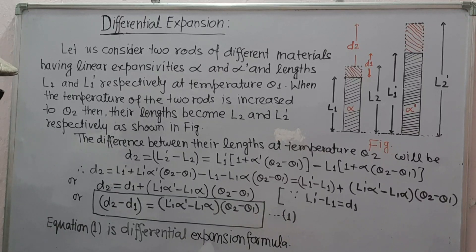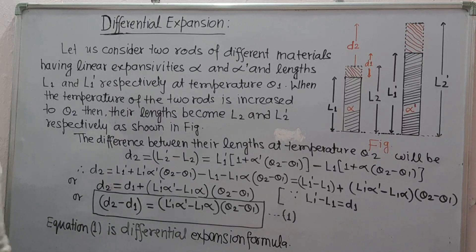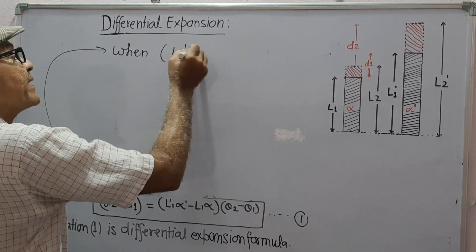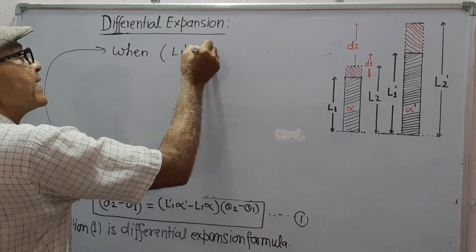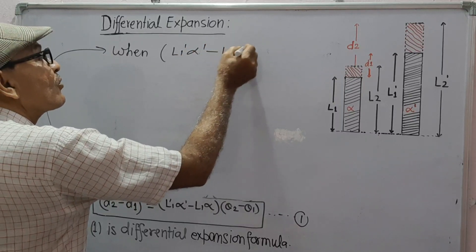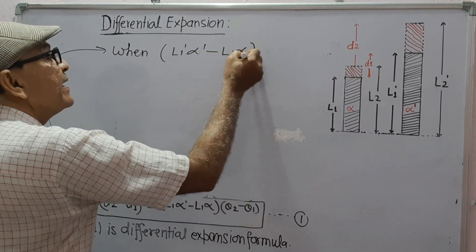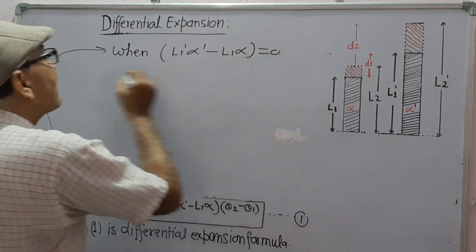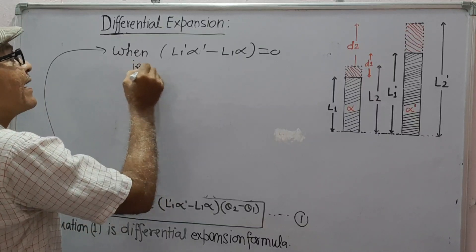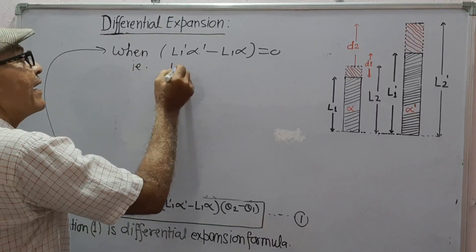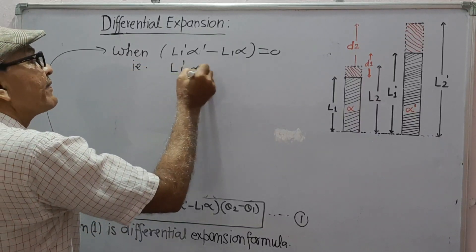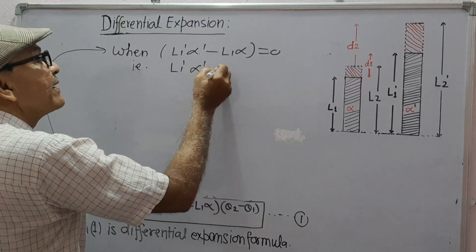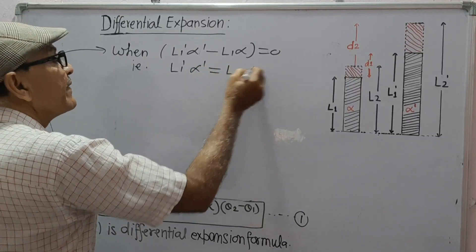This is equation 1, and it is known as the differential expansion formula. When L1 dash alpha dash minus L1 alpha is zero, that is, L1 dash alpha dash is equal to L1 alpha — suppose this is equation 2.